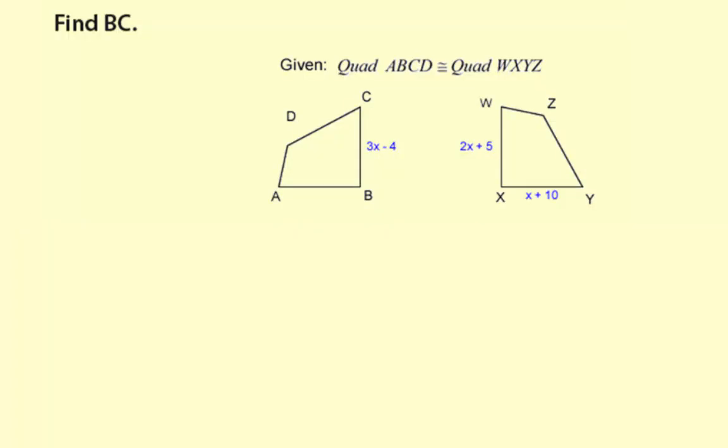Okay, now we're going to find BC, given quadrilateral ABCD is congruent to quadrilateral WXYZ.